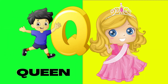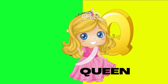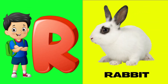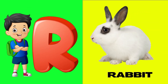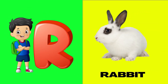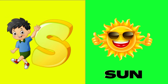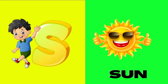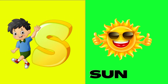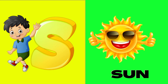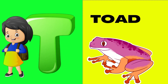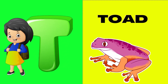Q is for queen, qu-qu-queen. R is for rabbit, r-r-rabbit. S is for sun, s-s-sun. T is for toad, t-t-toad.